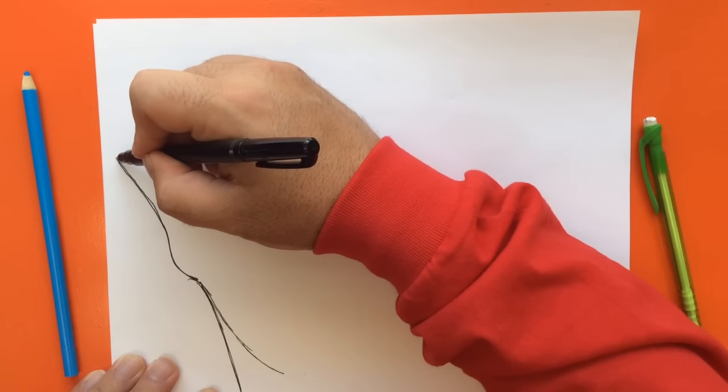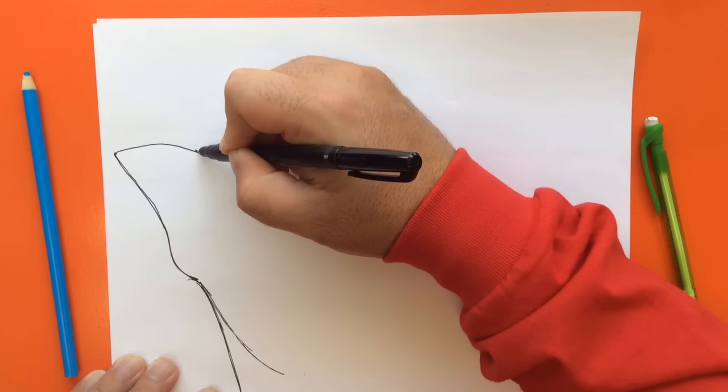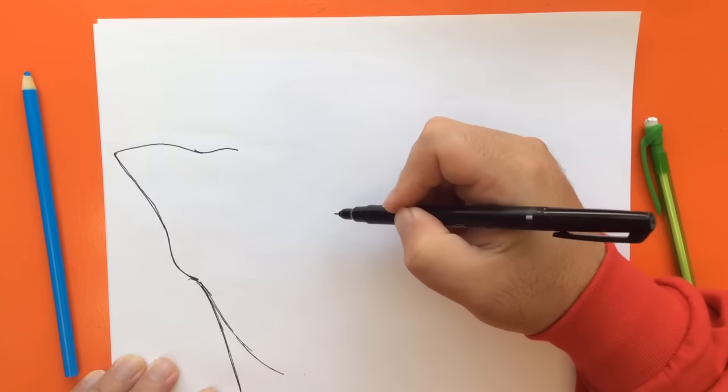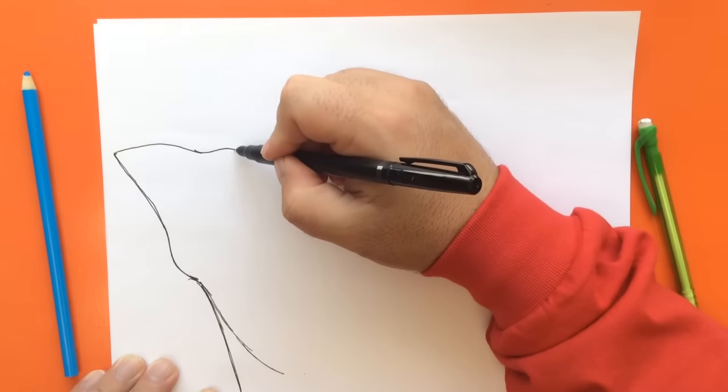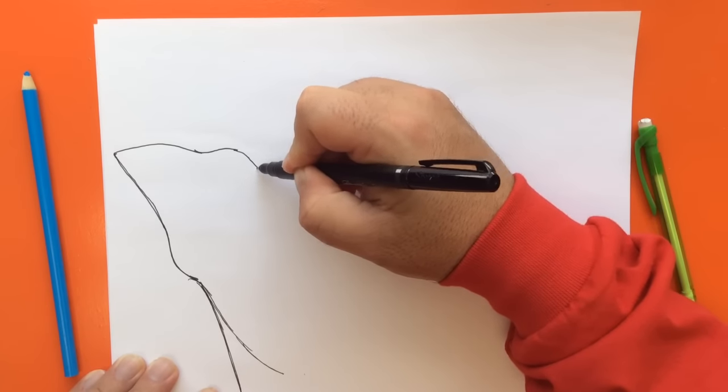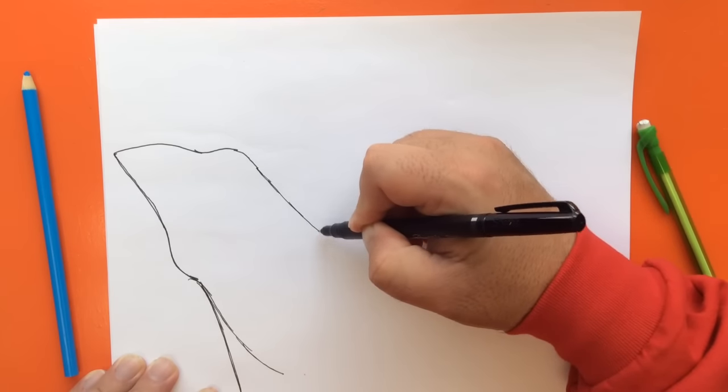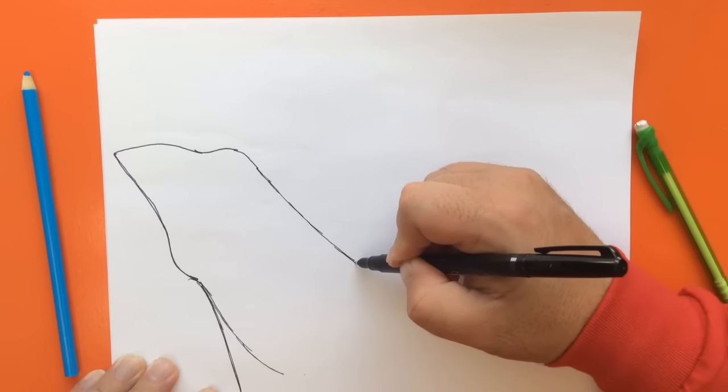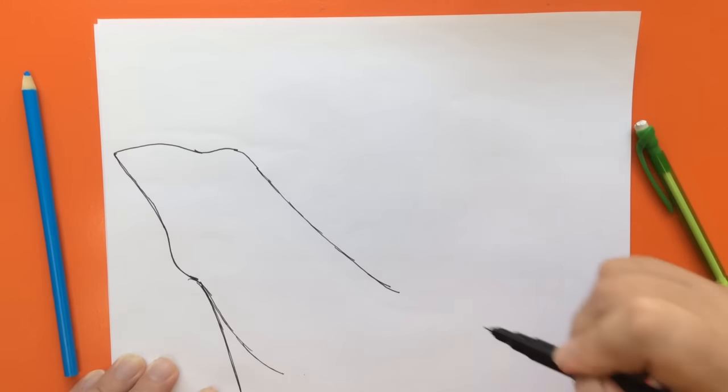Next, I'm going to make the pointed part of the snout up here to show that the shark is going to be coming up with its mouth wide open. So I'm going to bring this line down here and stop right about there.